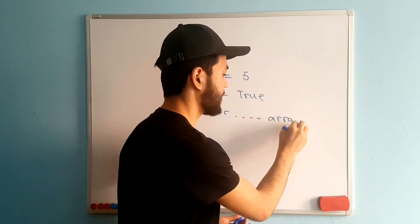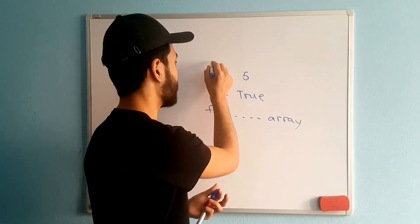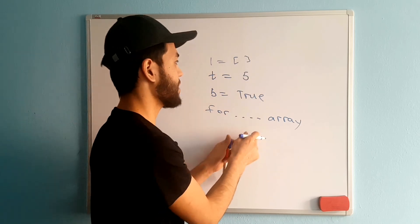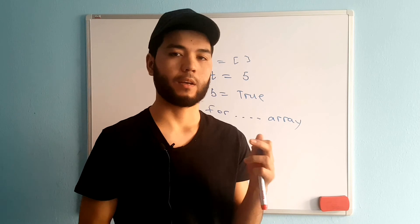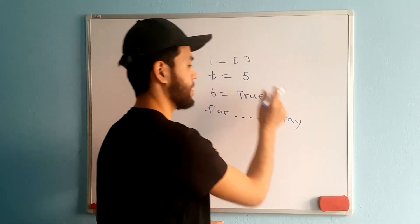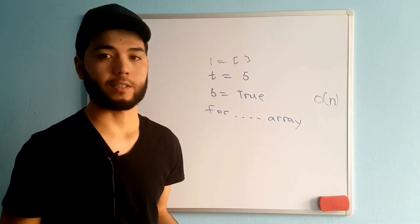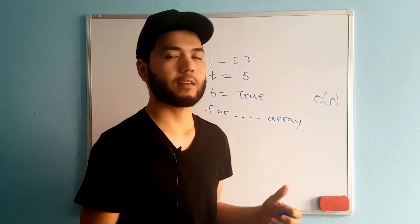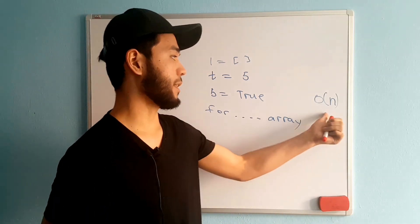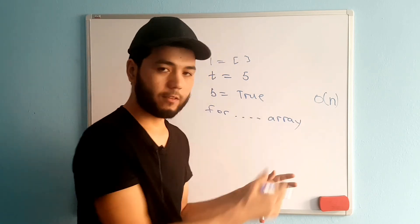When iterating with a for loop and appending each element to a new list — for example, l = [] and every iteration I append to it — the space complexity becomes linear, O(n). Every iteration adds to the list, so the memory used grows with input size. If your algorithm creates a list of size n, that gives linear space complexity.